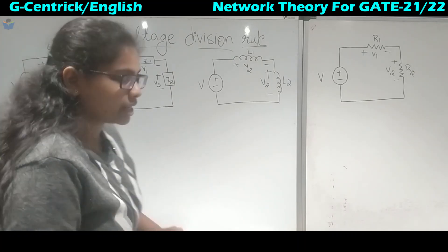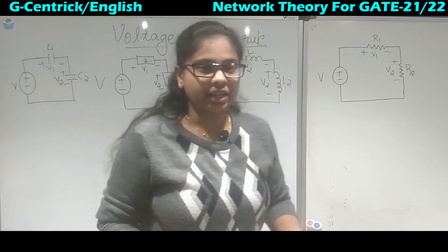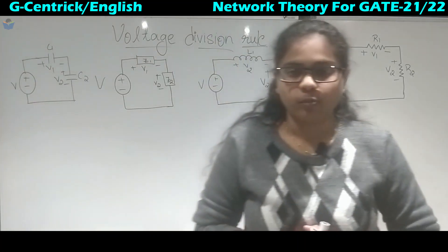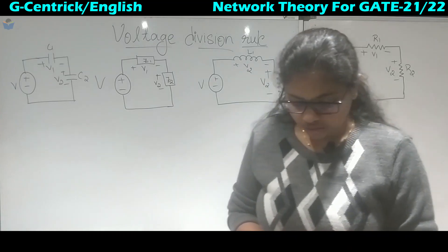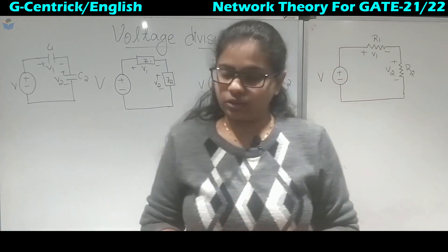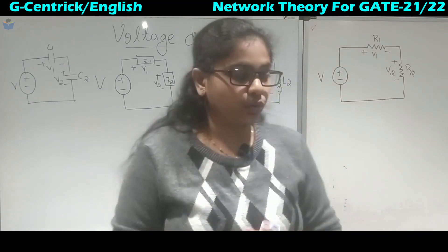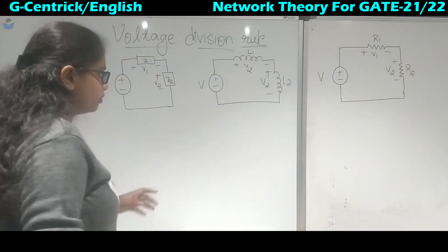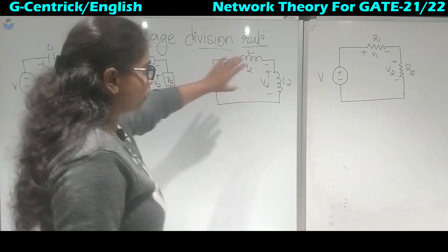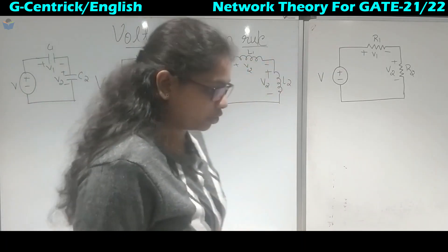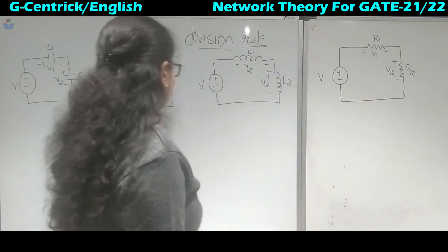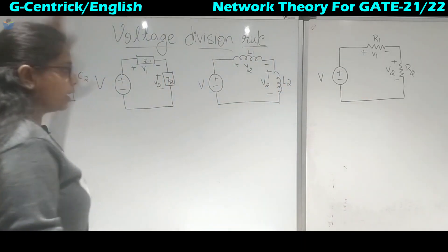In the previous lecture, we completed the current division rule and saw some problems based on it. In this lecture, we will see how voltage gets divided across resistors, inductors, capacitors and impedance.